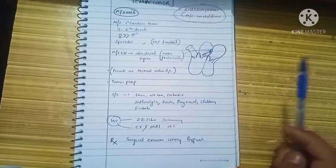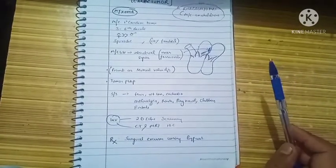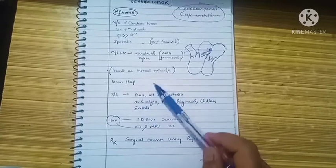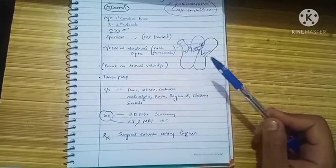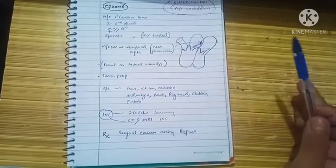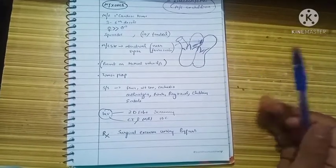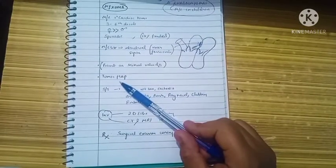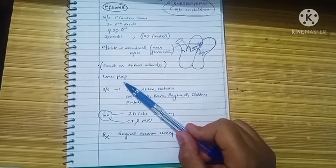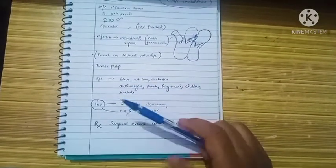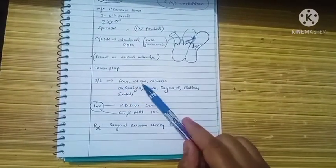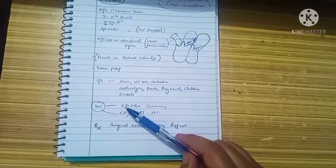These myxomas present with mitral valve disease symptoms because it is present near to the mitral valve, so the symptoms seen in the myxoma may mimic mitral valve disease. Also, we see tumor plop in this condition, that is a mid-diastolic sound. The signs and symptoms are fever, weight loss, cachexia that may mimic a malignancy.